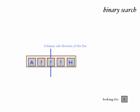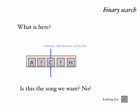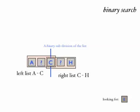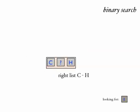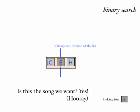By doing this binary subdivision, we've broken the list into two halves: a left list from A to C, and a right list from C to H. Is the song we're looking for, E, going to be in the left list or the right? Since E comes after C alphabetically, we can throw out the left sublist and just look at the right sublist. We do a binary subdivision of this list, and at last we've found our song — song E. So that's a binary search.